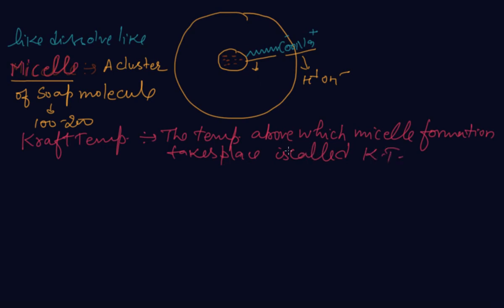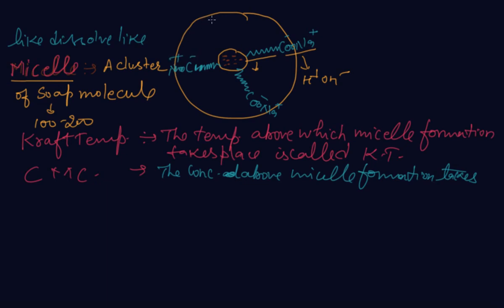And one is the critical micelle concentration. The concentration above which micelle formation takes place is called critical micelle concentration, or CMC. You can also draw many C15H31COONa molecules with negative and positive charges. So you have revised Krafft temperature, critical micelle concentration, and micelle. These are the definitions which we must use.